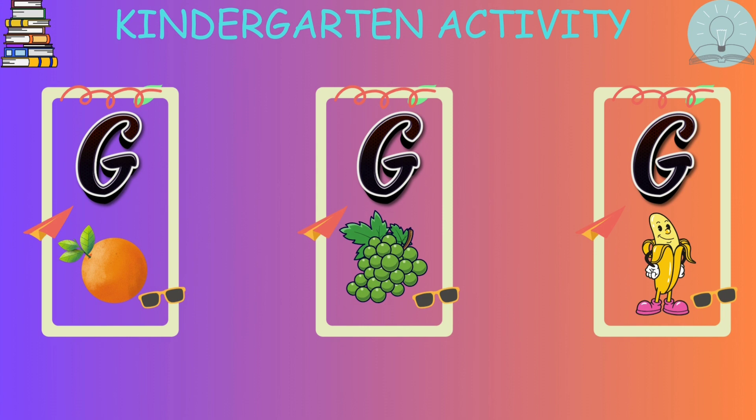Choose the correct box with the correct letter and correct image. G for grapes.